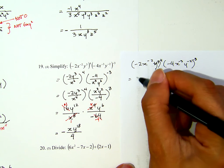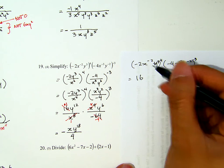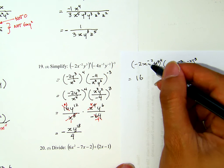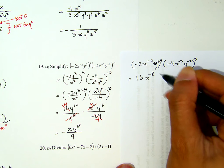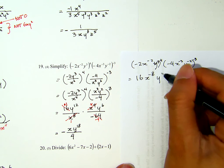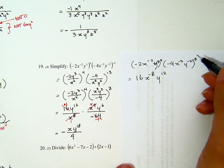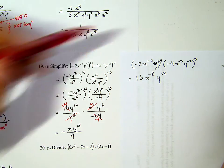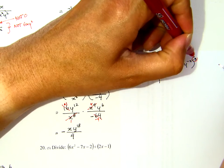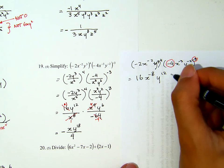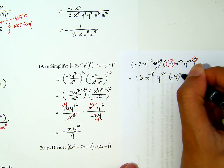Negative 2 to the power of 4 is positive 16. X to the power of negative 2 to the power of 4 is x to the negative 8. Y cubed to the 4th is y to the 12th. Now, the dangerous part is actually here. A coefficient to the power of negative exponent.